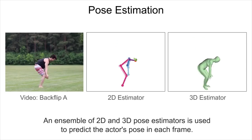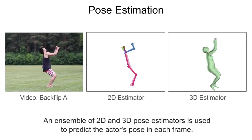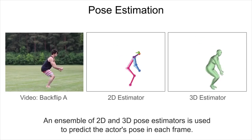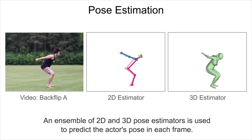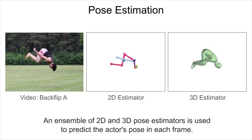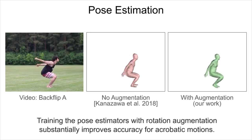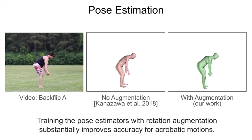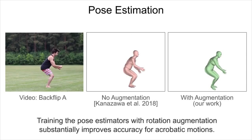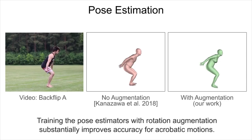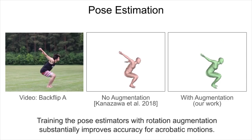For pose estimation, an ensemble of 2D and 3D pose estimators is used to predict the actor's pose in each frame. Training the pose estimators with rotation augmentation substantially improves accuracy for acrobatic motions.